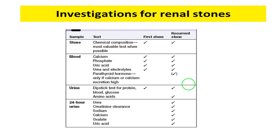The investigations required to diagnose the cause of renal stones include: if the stone is available, send it to the lab for chemical composition analysis to identify whether it is a calcium, uric acid, or other type of stone. Take blood samples for measurement of calcium, phosphate, uric acid, urea and electrolytes, and parathyroid hormone. Test urine for protein, glucose, and importantly amino acids. A 24-hour urine collection can also be used to measure additional analytes.